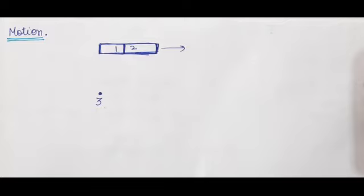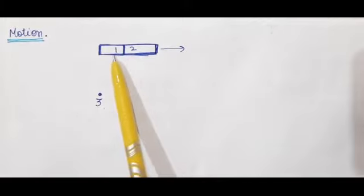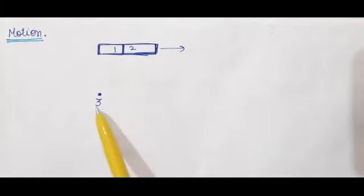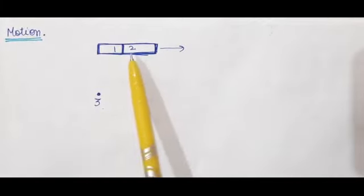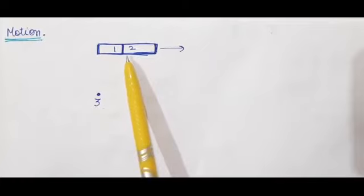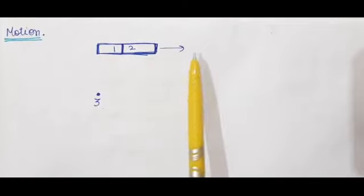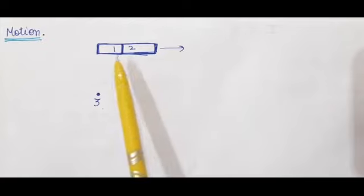Now, how to define motion — or what is motion? An object may appear to be moving for one person and stationary for some other person. Let us take an example. Here we have person number 1, 2, and 3. Persons 1 and 2 are sitting or standing in a bus, and the bus is moving in this direction.